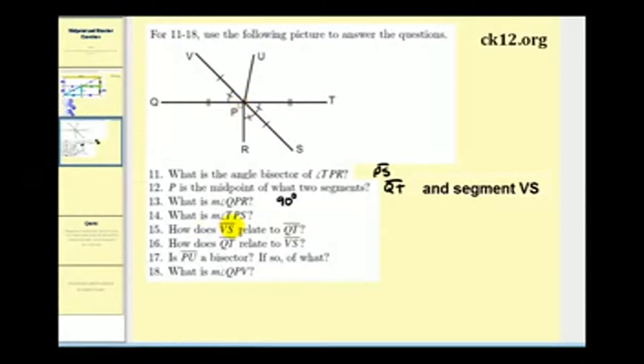Number 14, what is the measure of angle TPS? Angle TPS is this angle here, and from the previous question we know that angle QPR is 90 degrees. It's also a linear pair with angle RPT, so angle RPT would have to be 90 degrees. And since segment PS bisects angle RPT, if we divide 90 degrees by two, angle RPS and angle SPT would have to be 45 degrees.